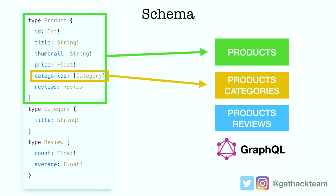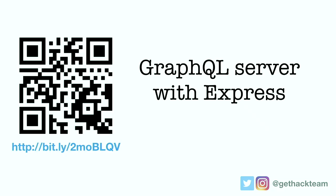Below the product type you can see a category type defined — it just returns a title, because the title is the only thing I'm displaying in my user interface. It's like a one-to-many relationship, so my product can have multiple categories and all those categories have their own title. I did the same for the review — returning the count, which is the total number of reviews, and the review average. The nice thing is you can also rename fields later on in your resolvers. I created a small code sandbox with the code for this — I'll put it on my Twitter so you can find it and play with it at home.